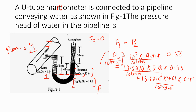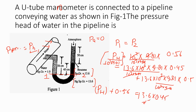Now we can write it: pH is the pressure head. So this 10³ cancels. pH plus 0.56 equals 13.6 times 0.45 plus 13.6 times 0.5. So we solve and the pressure head of water comes out to be 13.6 times 0.45 plus 13.6 times 0.5 minus 0.56, which equals 12.36 meters of water.